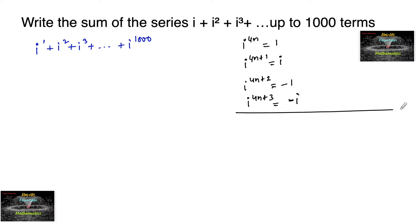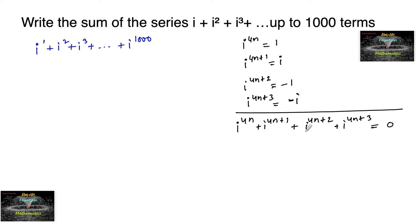So if you add all of these — i to the power of 4n, plus i to the power of 4n plus 1, plus i to the power of 4n plus 2, plus i to the power of 4n plus 3 — this sum always equals zero. This means four consecutive powers of i always sum to zero.